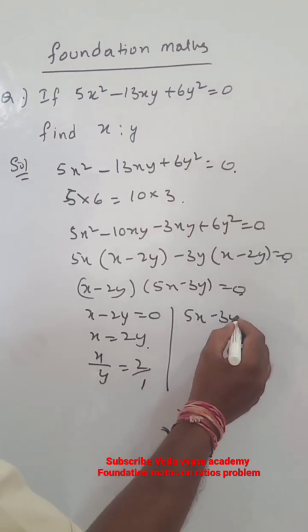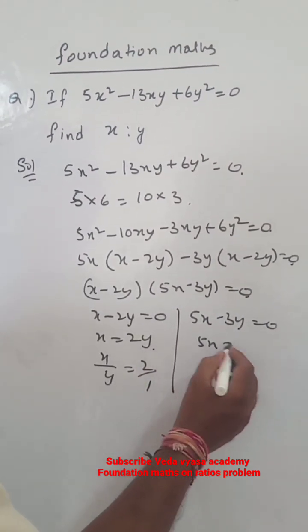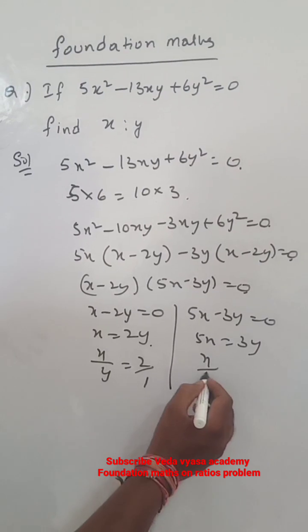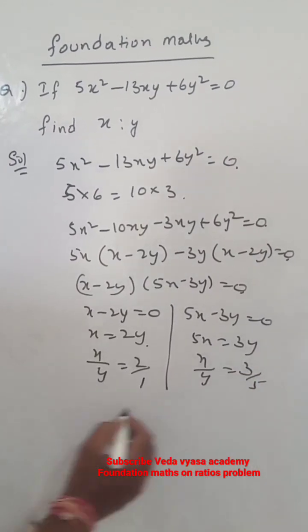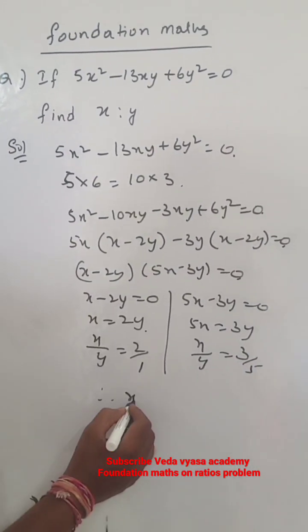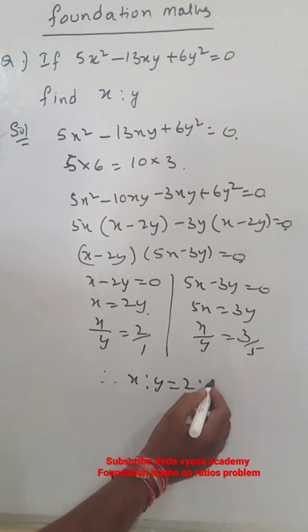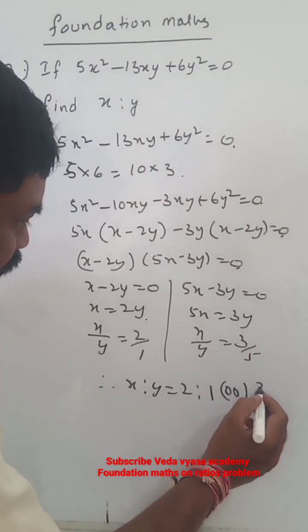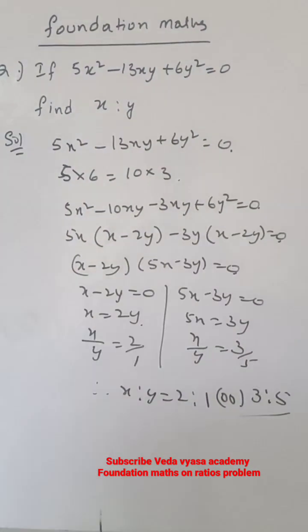From the second factor, 5x minus 3y is equal to 0, so 5x is equal to 3y, therefore x by y is equal to 3 by 5. Therefore, x is to y is equal to 2 is to 1 or 3 is to 5 is the answer.